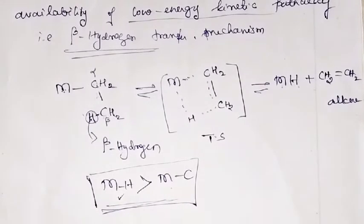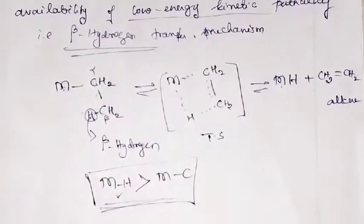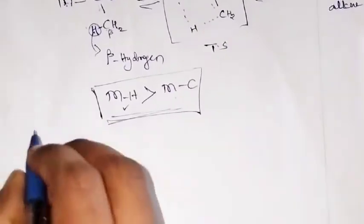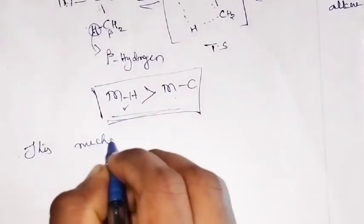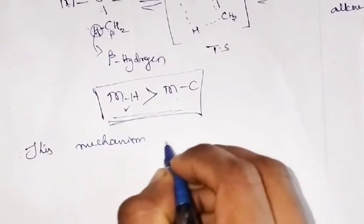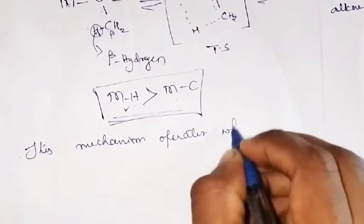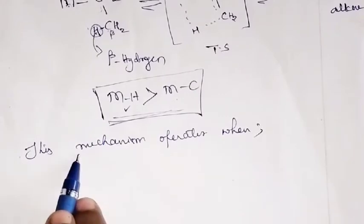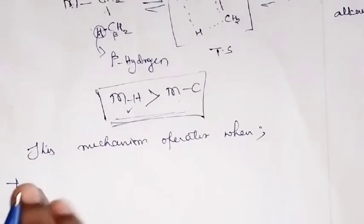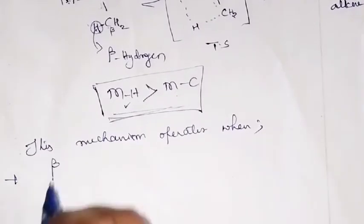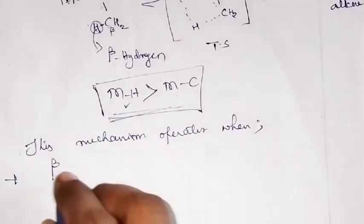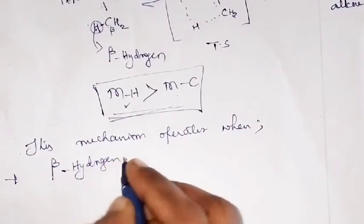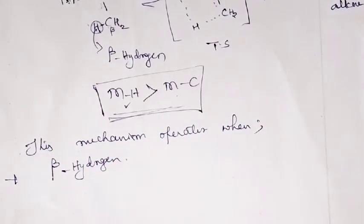Now we will see when the mechanism operates. This beta hydride transfer mechanism will operate only if there is a presence of beta hydrogen. If there is a presence of beta hydrogen, then only the mechanism will occur.